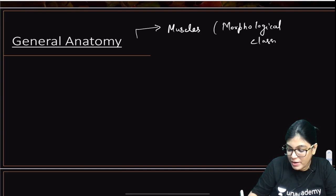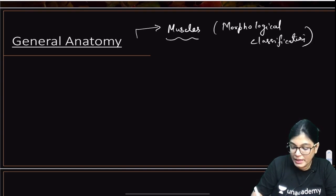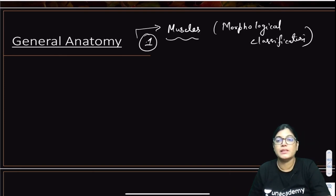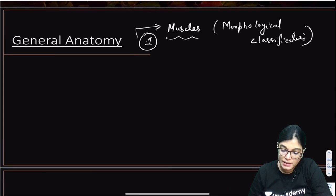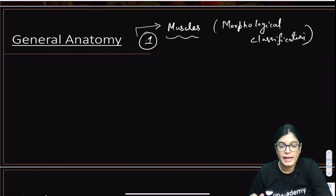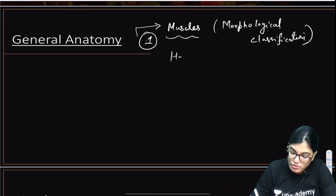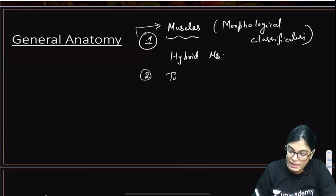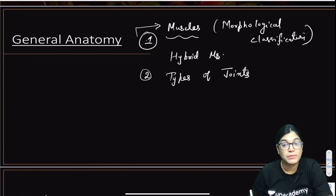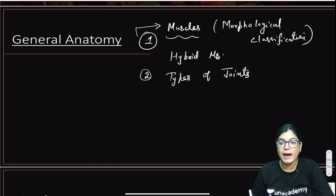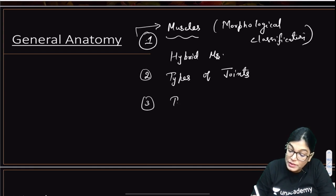For image-based questions, they can give any muscle and ask you to identify the muscle fiber type. Direct MCQs also come, like types of hybrid muscles and their nerve supply. Other very important topics include types of joints — you must know all types of cartilaginous joints, fibrous joints, and different varieties of synovial joints: uniaxial, biaxial, multiaxial. Types of epiphysis is also very important.